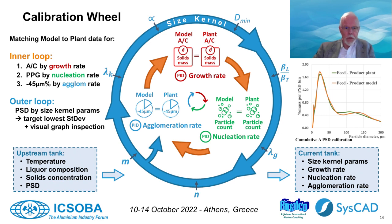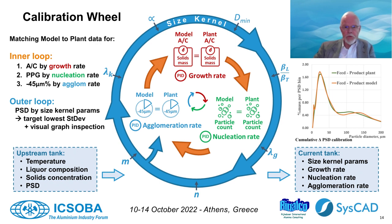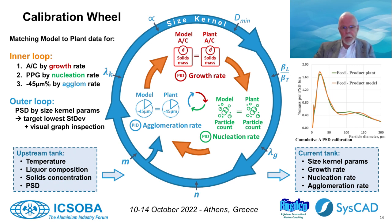That's where the outer loop comes in. We adjust the size kernel parameters and run the inner loop again, and we repeat this process over and over again until we have achieved the best match between model PSD and plant PSD. We can judge that on the basis of standard deviation and by visual overlay of the PSD curves. So once we have reached that point, only then we will have the right values for growth rate, nucleation rate and agglomeration rate, as well as the correct values for the size kernel parameters.